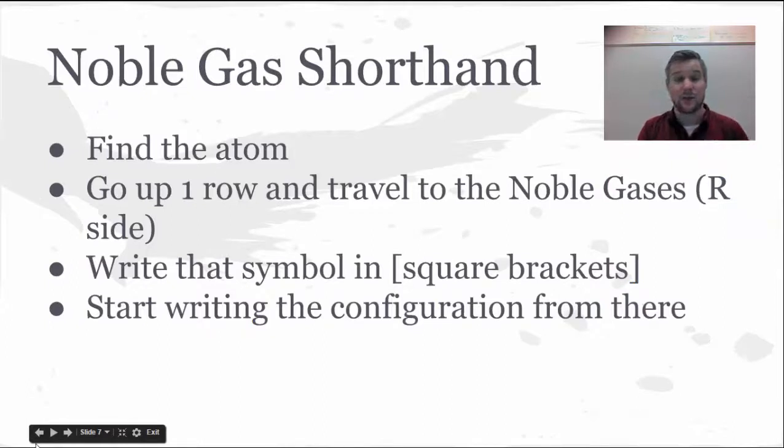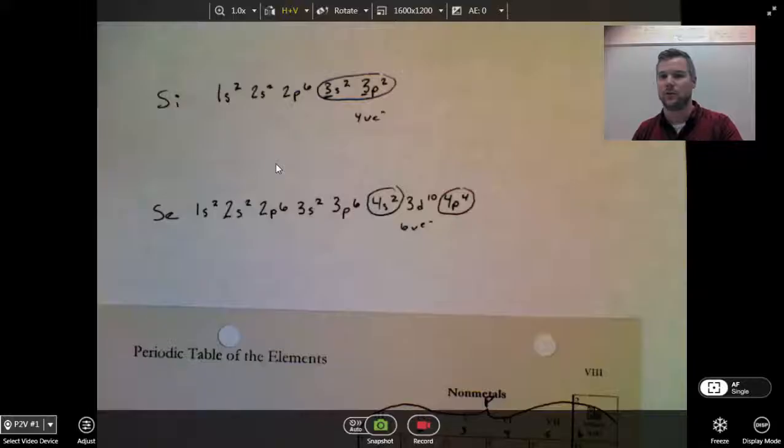Now, on the selenium example, we started to get to a really long electron configuration, and there's a shortcut on that, and that's the noble gas shortcut. And you're going to do that by finding the atom that you're interested in, go up a row all the way to the right to the noble gases, write that symbol in square brackets, and then you're going to start your electron configuration from there.